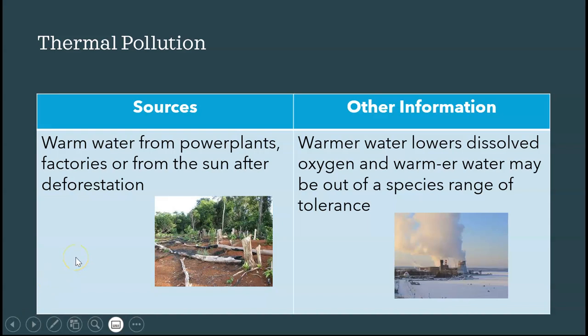The next type is thermal pollution, which occurs when water warms up. Factories use water to cool their machines, while power plants use water to heat and spin turbines generating electricity, then discharge that warmer water back into bodies of water. Deforestation can also remove shade from streams, causing them to warm up.